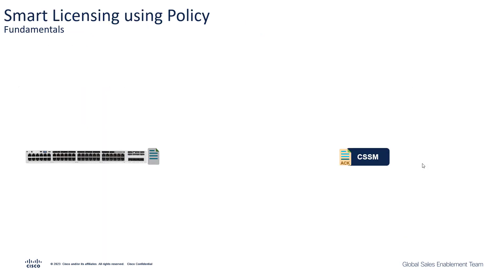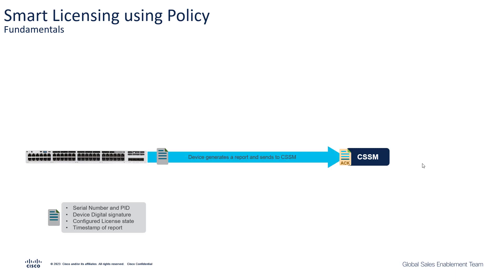Now let us understand the fundamentals of how smart licensing policy works. Take a 9300 device as an example. Our device periodically generates what is called a RUM report. The device generates this RUM report either periodically or if there is a change in the license level. This RUM report contains the serial number and the PID as well as the digital signature of the device that generated the report. It also contains the configured license dates and the timestamps of when the report was generated. In its most fundamental form, smart licensing policy requires you to take this report file and send it to the CSSM.